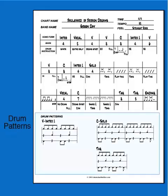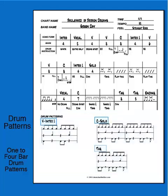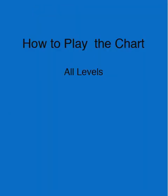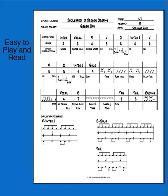At the bottom of the chart are the one to four bar drum patterns that are used in the song. Each pattern is labeled with the song form that it is used in. To read the chart, count the band in or start your CD player and start counting the bars of each song form. Simply play the drum pattern that corresponds to the song form as many times as indicated in the bars block.